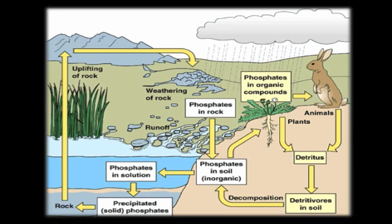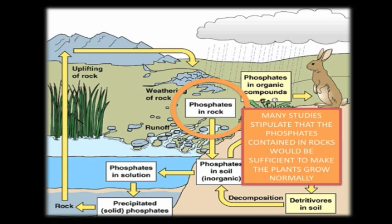This diagram represents the phosphate cycle. It is important to know that phosphorus is a major component of phosphates. In nature, a big quantity of phosphates is found in the rocks.